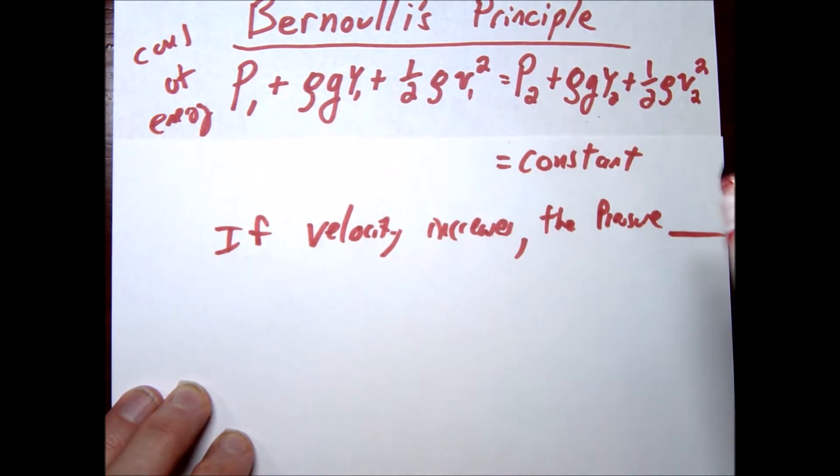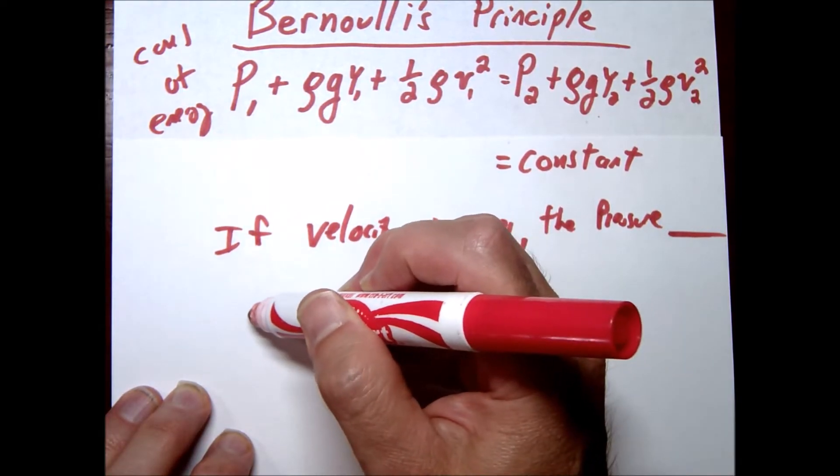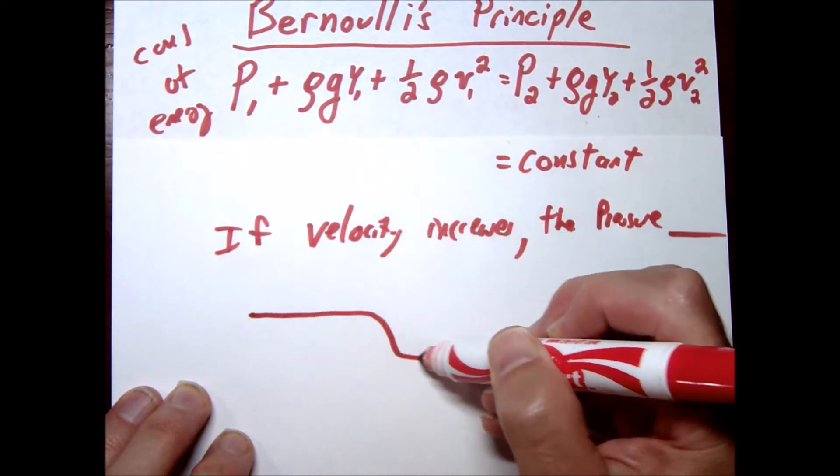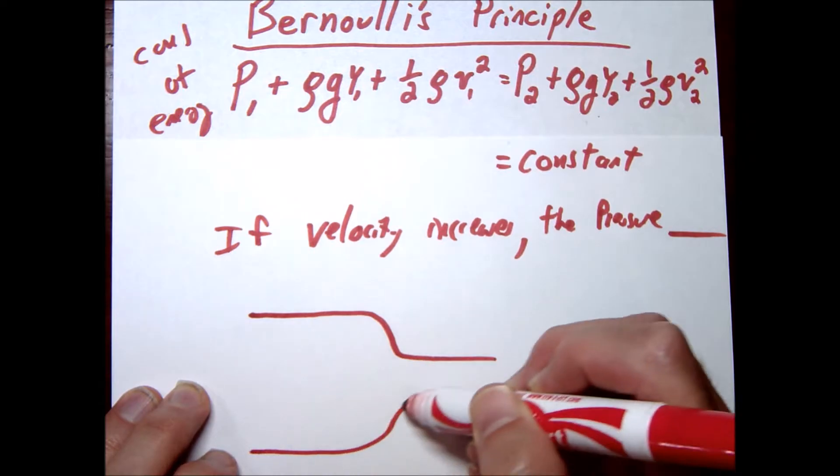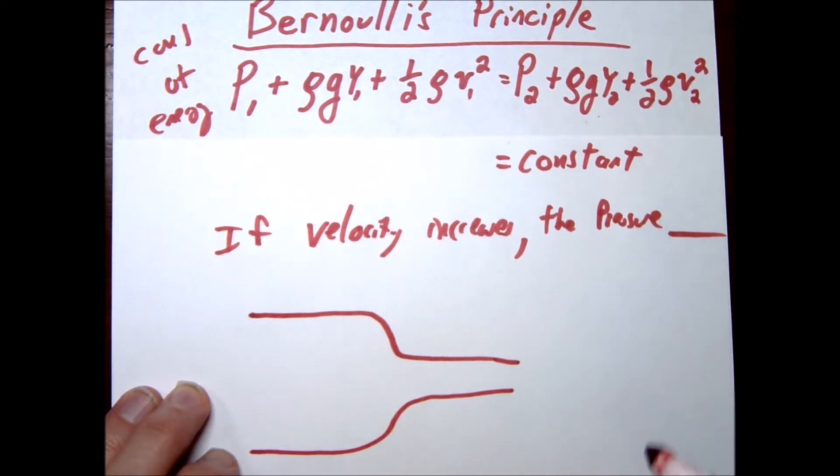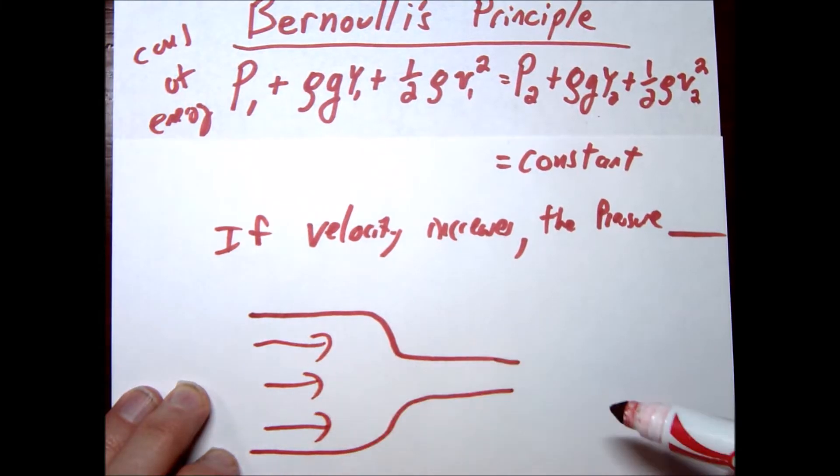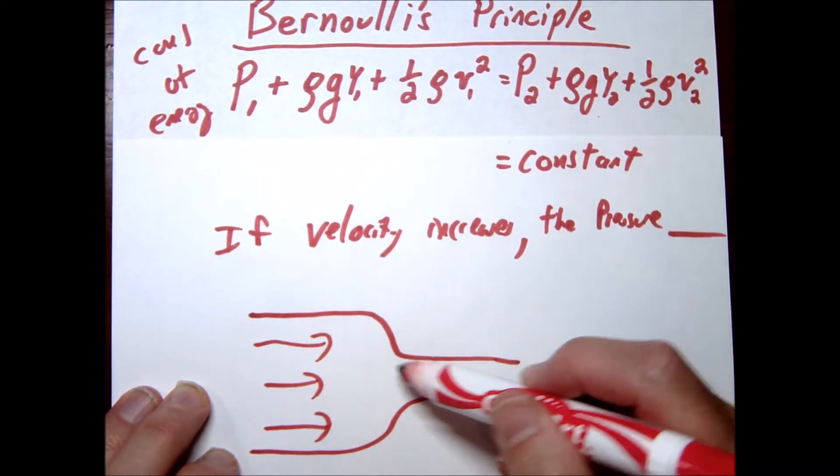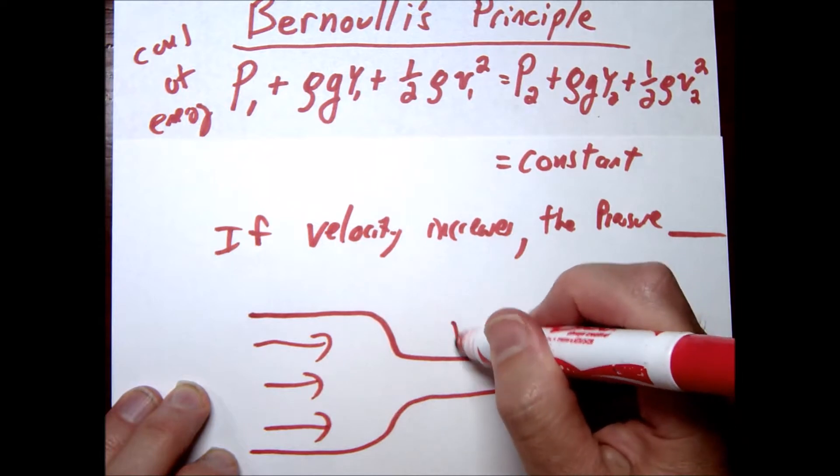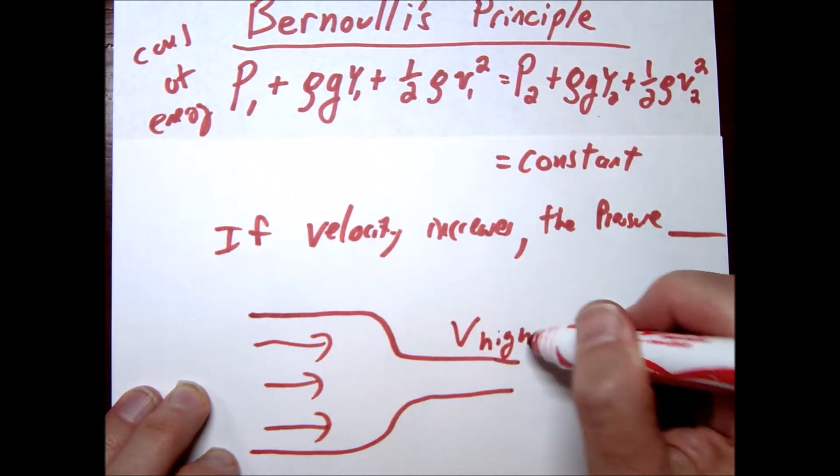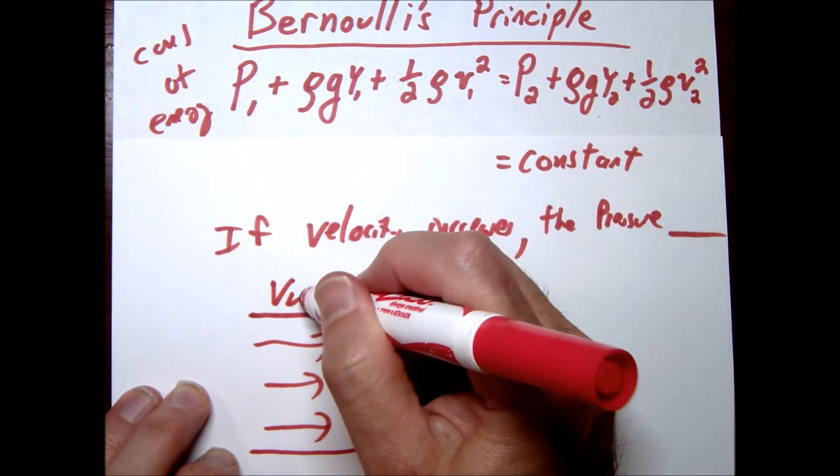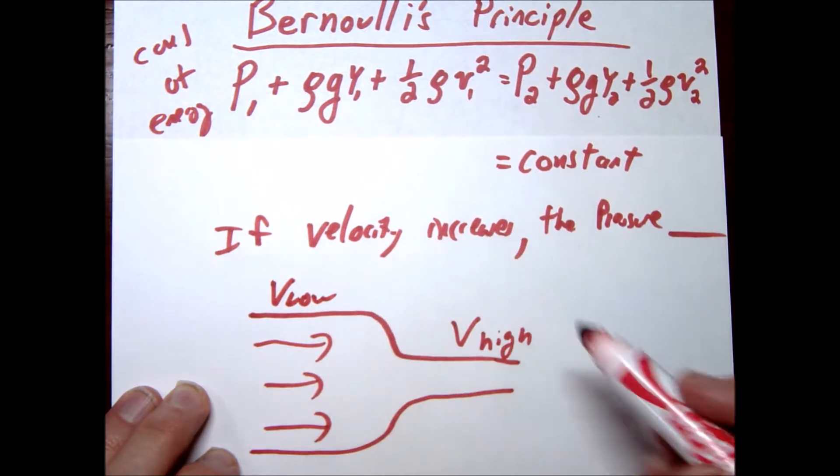Now this is kind of counterintuitive. Let's just look at it maybe in a picture. Maybe this will make more sense. So if we draw out a pipe for example and we have kind of our flow, fluid flow going through it, hopefully you remember that as this area decreases the velocity has to go up. So this would be a region of high velocity, this would be a region of low velocity.